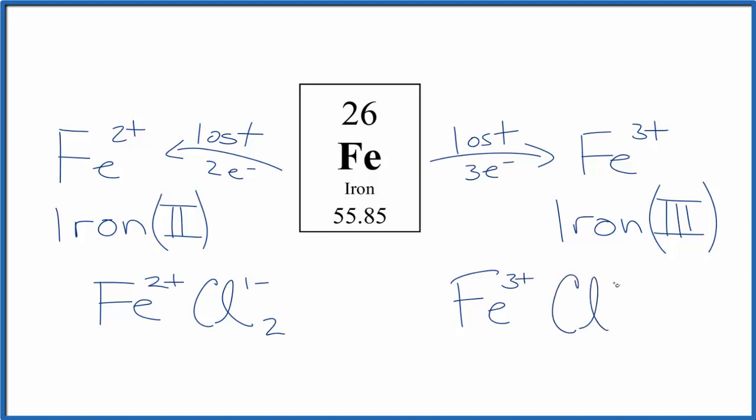Again, if we have our chlorine with one minus, we'd have three of these chloride ions. So that would balance the charge. We'd call this iron three chloride. And since they have opposite charges, they would be attracted to form an ionic bond.